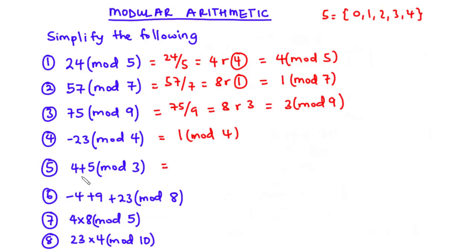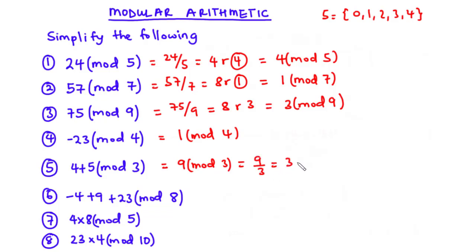Question 5: (4 + 5) modulo 3. We add 4 and 5 to get 9, so this becomes 9 modulo 3. Dividing 9 by 3 gives 3 remainder 0, so 9 mod 3 equals 0.